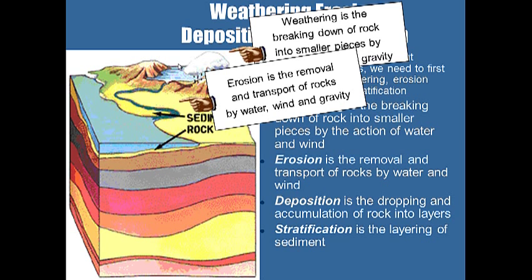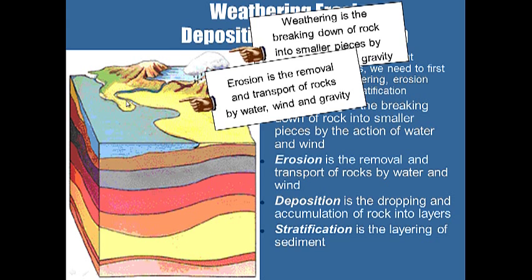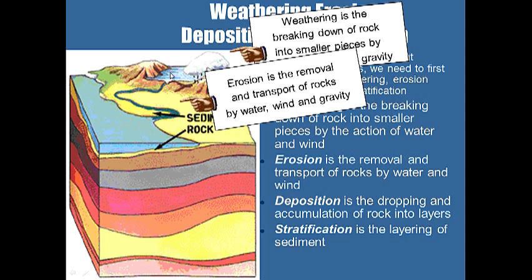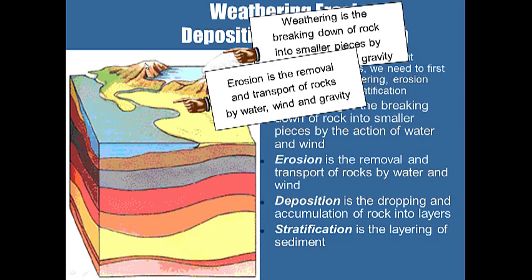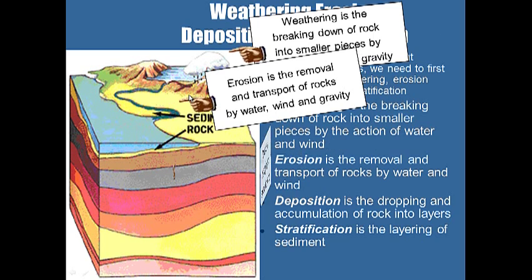Erosion is the removal and transport of rocks by water, wind, and gravity. For example, this river here is moving sediment — sand. Or with gravity, rocks are falling down the side of a mountain. That's erosion.